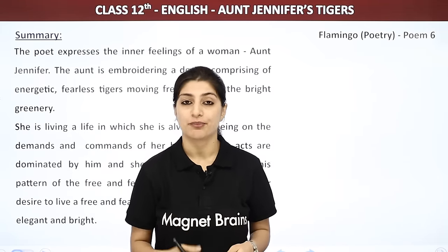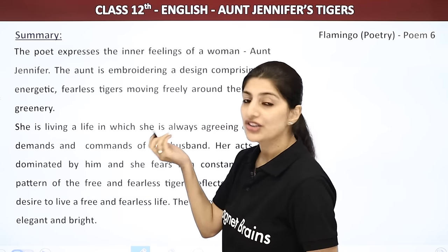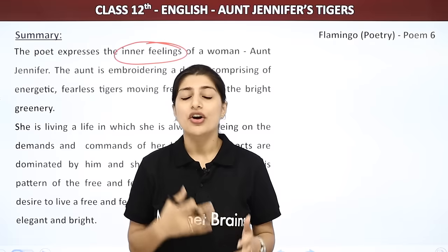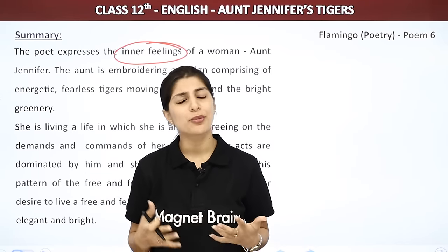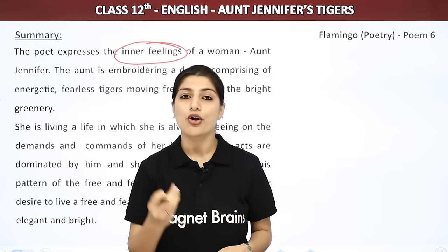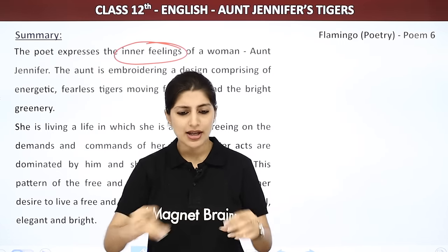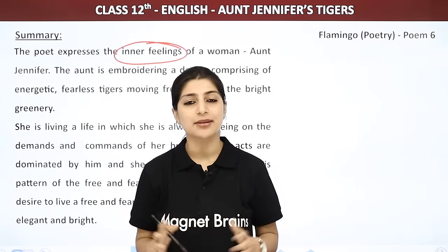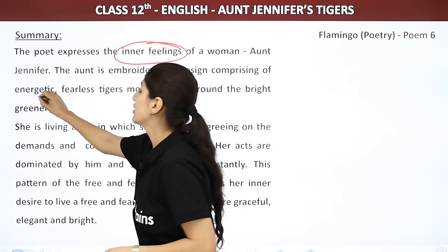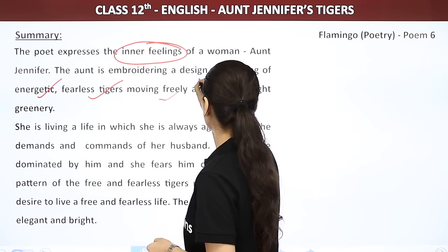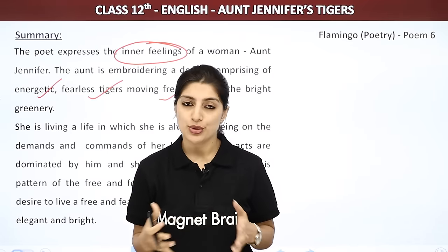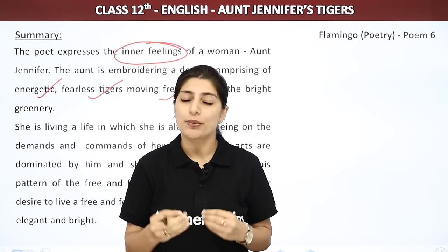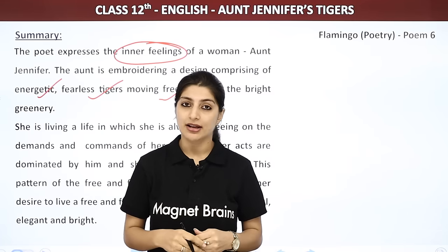Aunt Jennifer ki inner feelings ke baare mein express kariye. Chunki Aunt Jennifer ke husband bahut dominating aur demanding hain, jiski wajah se unhone poori zindagi bahut kaam kiya, bahut hard work kiya, aur ab woh bahut weak ho gayi hain. Inki ek hobby hai — embroidery karna, yaani sohi daaghi se kapde par designs banana. Is embroidery mein woh tiger ki design bana rahi hain.